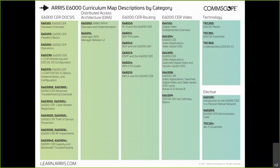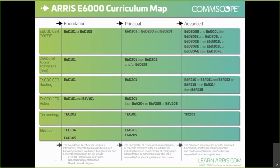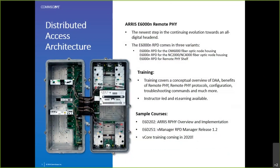Lauren will show you where on our website you can find the curriculum map a little later. Let's take a look at our next area: distributed access architecture training. The product line we offer is the AERIS E6000N remote PHY devices. Currently we have three devices in the marketplace, designed to fit inside existing node cabinets — one for the OM6000 fiber optic node housing, one for the NC2000 and NC4000 node housing, and the E6000N RPD remote PHY shelf. We offer all types of training for these devices, covering the benefits of distributed access architecture, remote PHY protocols, configuration, troubleshooting, and much more.